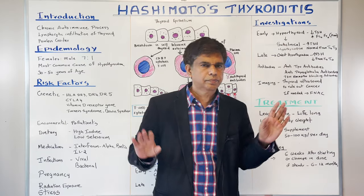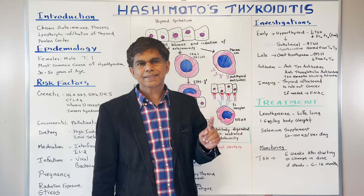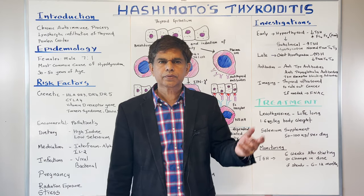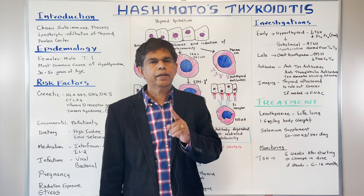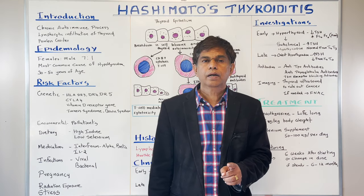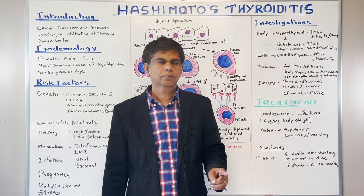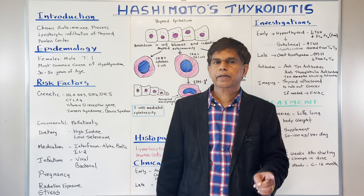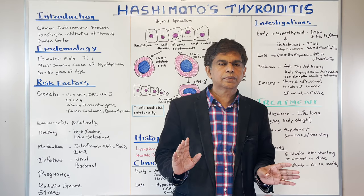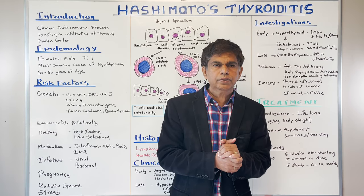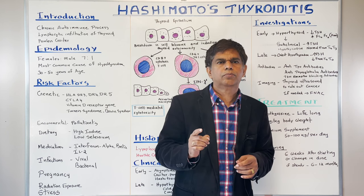For treatment: give thyroid supplementation with levothyroxine — this is lifelong treatment. The dose is 1.6 micrograms per kilogram body weight, and you can gradually increase it. Also consider selenium supplementation, as studies have shown some benefit in patients with Hashimoto's thyroiditis — give 50 to 100 micrograms per day; this is evidence-based. For monitoring: start treatment and check again in six weeks. If you make any dose changes, recheck in six weeks. Once stable, monitor every six to twelve months.